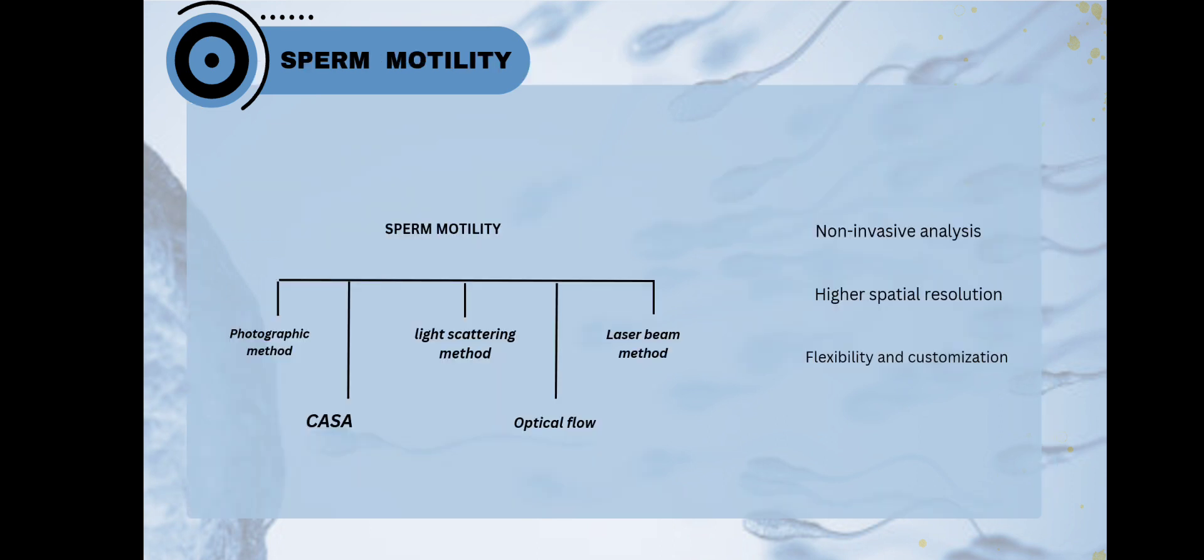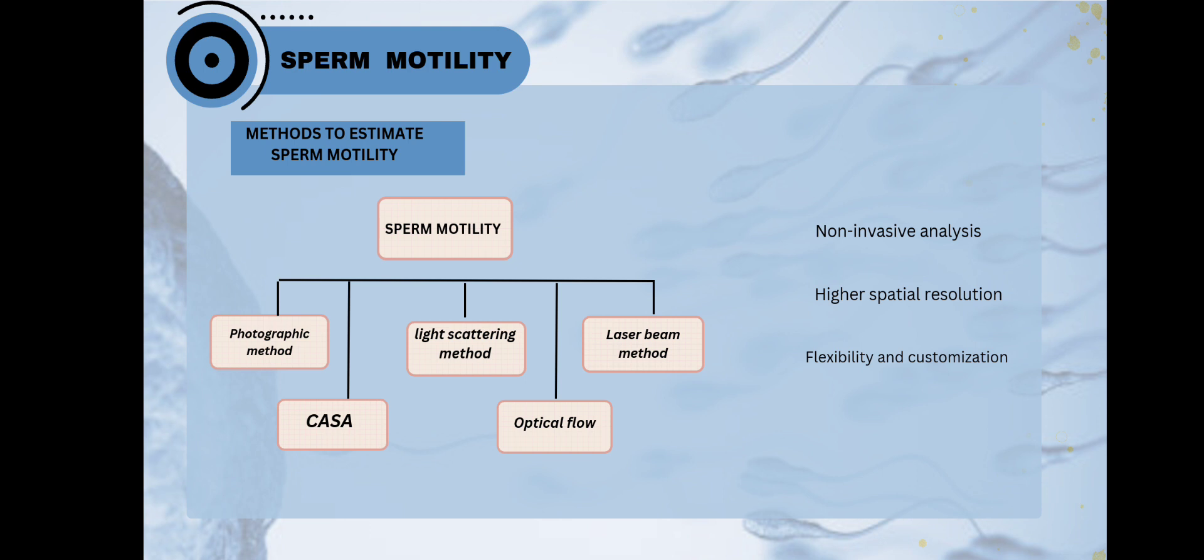Here are the methods to determine the sperm motility: first, the photographic method; second, the light scattering method; third, the laser beam method; fourth, CASA; and fifth, the optical flow. Basically, CASA and optical flow are more precisely used. CASA is designed for sperm analysis, but nowadays we are moving toward optical flow.